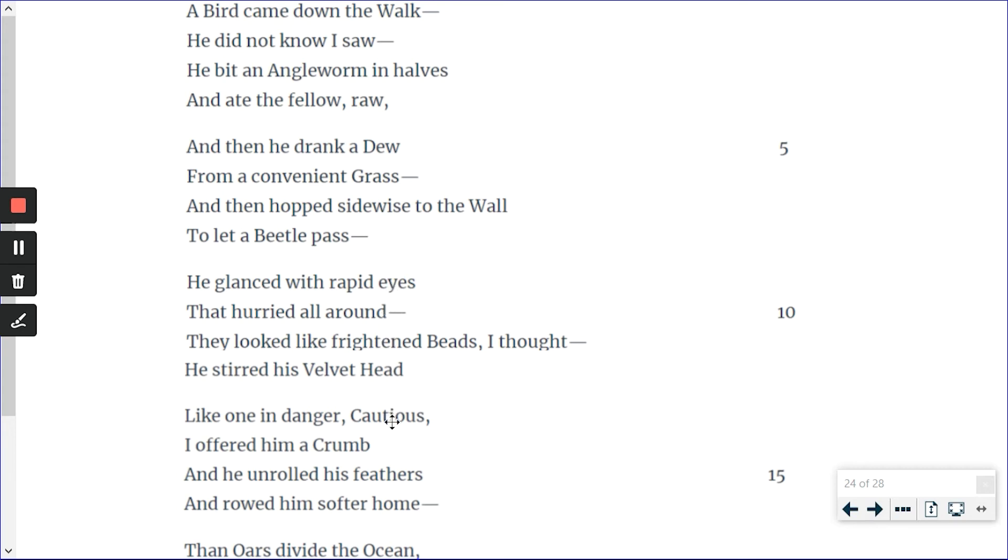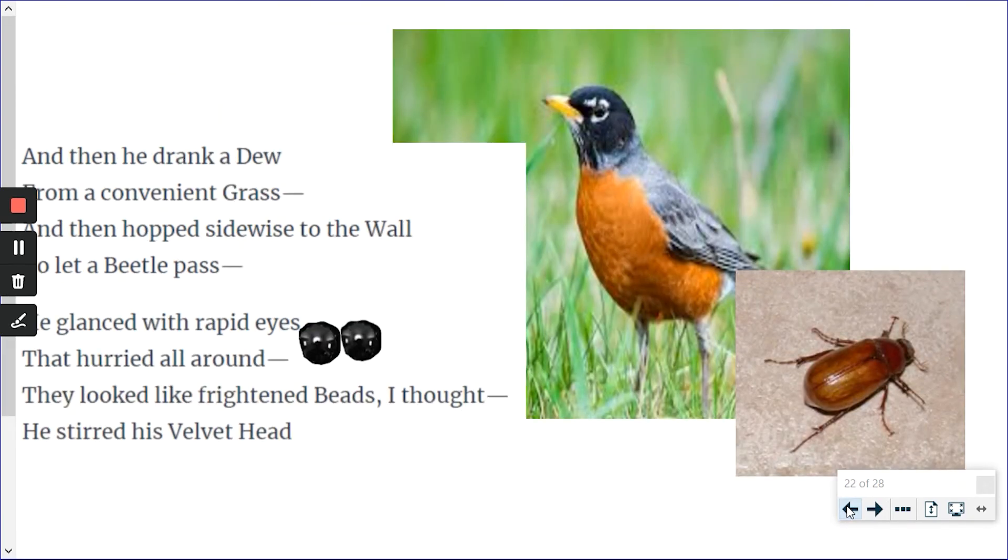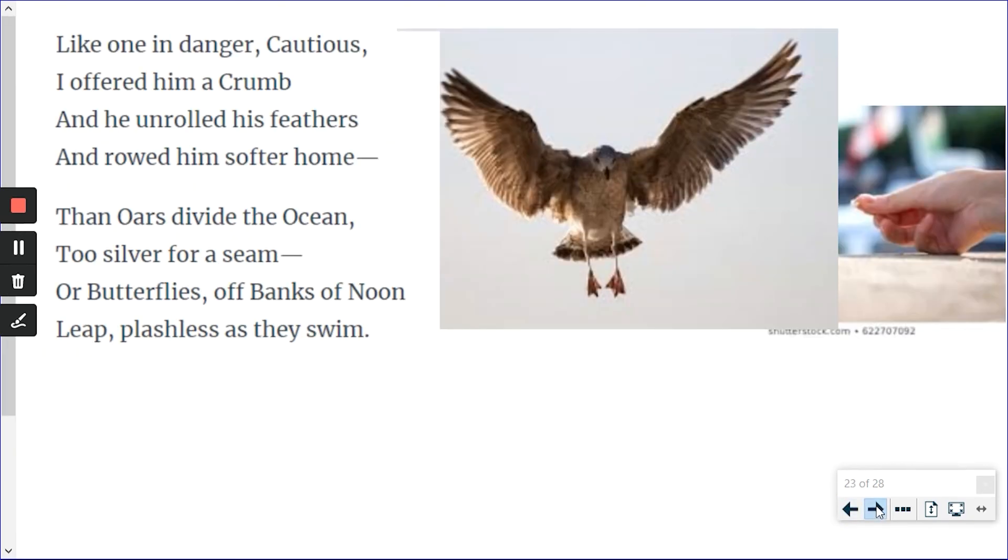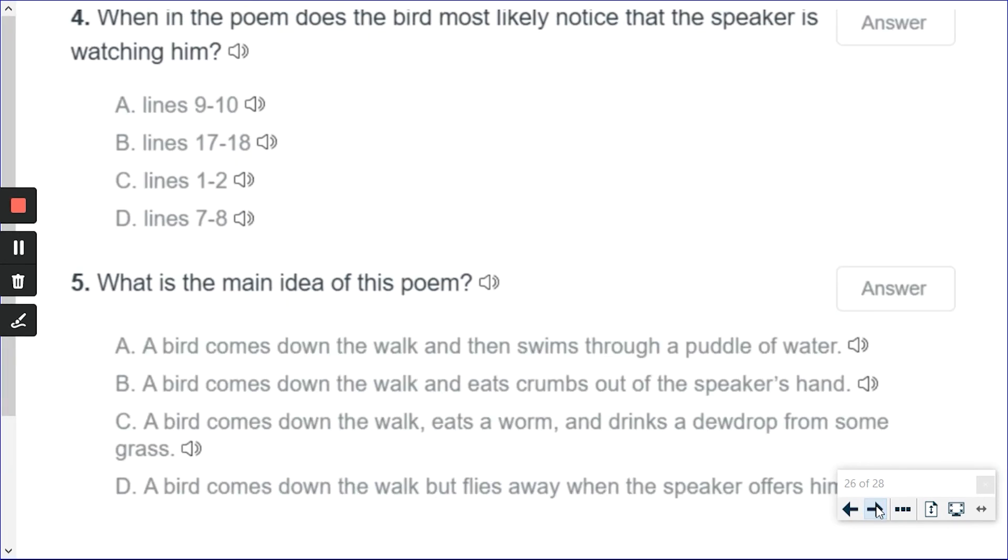Where does he begin to notice that the poet is watching him? It doesn't say anything down here. I'm thinking, let's see, this is 15. So, 14, 13 and 14. And possibly up here. Let's see. Let's go back and look at those numbers. Well, where am I going? Let's see. I had 9 and 10, 17 and 18. Let's go back and look at that.